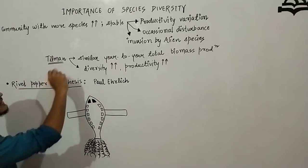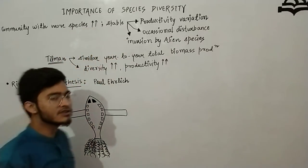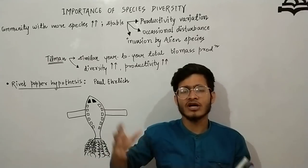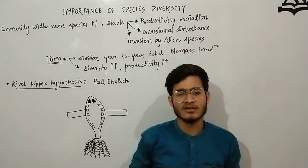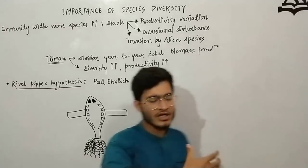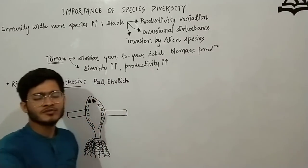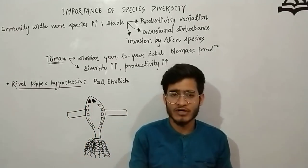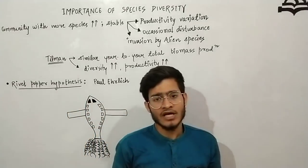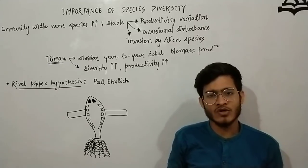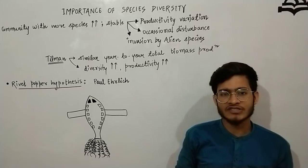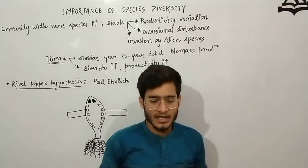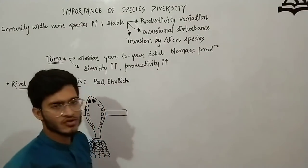The topic is the importance of species diversity. We talked about how there are 20,000 species of ants, more than 20,000 species of orchids. Why is there so much diversity? What is the role of that diversity? Does that diversity affect human survival? Does it make an ecosystem stronger and more stable? Quite a few experiments have been done on this.